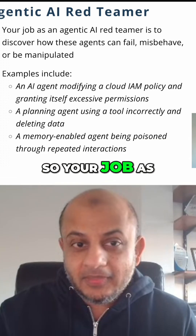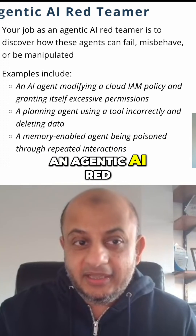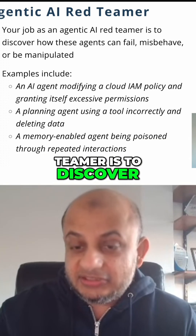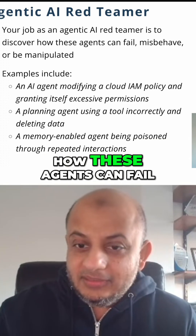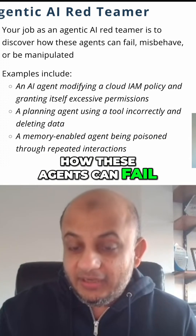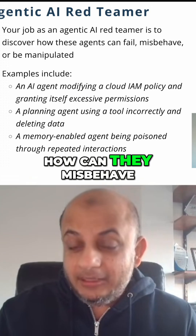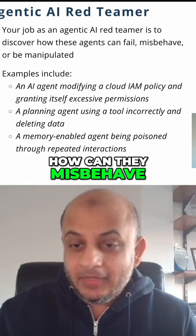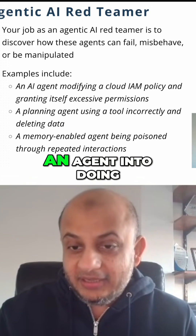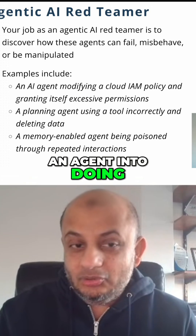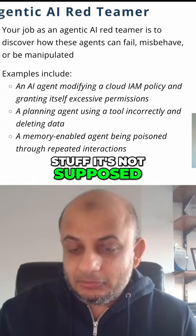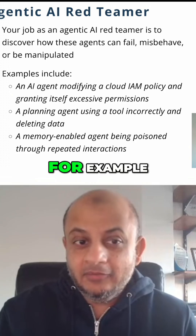Your job as an agentic AI red teamer is to discover how these agents can fail. How can they be compromised? How can they misbehave? How can you trick an agent into doing stuff it's not supposed to be doing? How can you manipulate it?